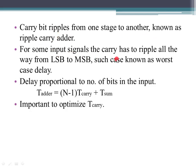For some input signals, the carry has to ripple all the way from LSB to MSB. That gives us a worst-case delay in the final stage. The delay from LSB to MSB passing through all stages is known as the worst-case delay.